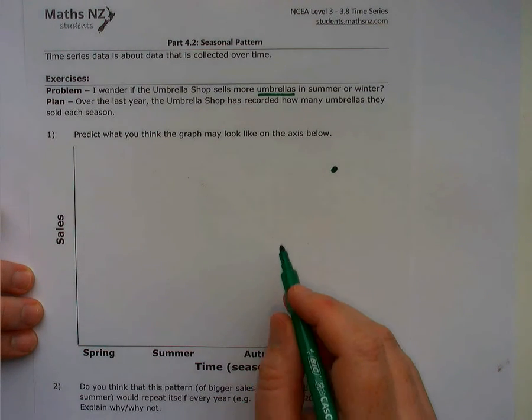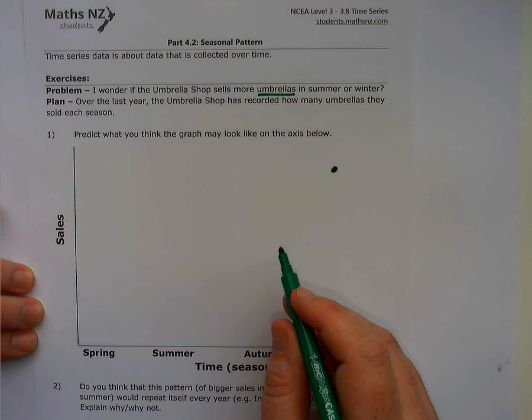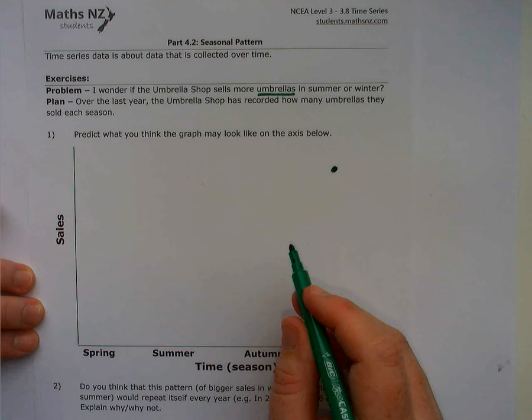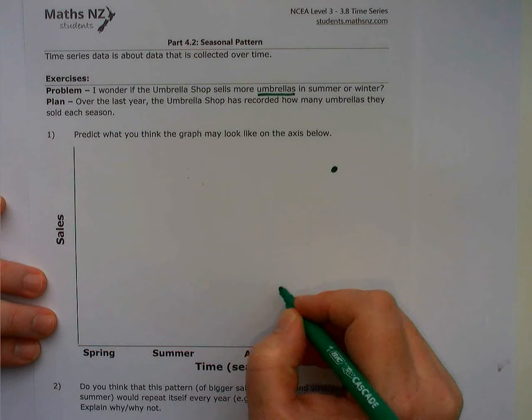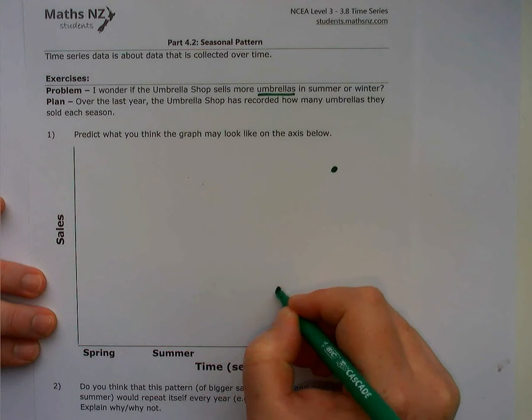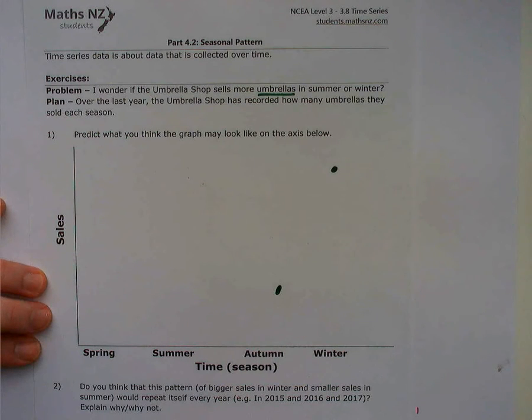In autumn, there tends to be a lot of warm, dry days. There don't tend to be a lot of wet days coming. They might start coming in with a few wet days, but autumn tends to be quite long and dry. So I'm going to say that there's quite low sales in autumn.